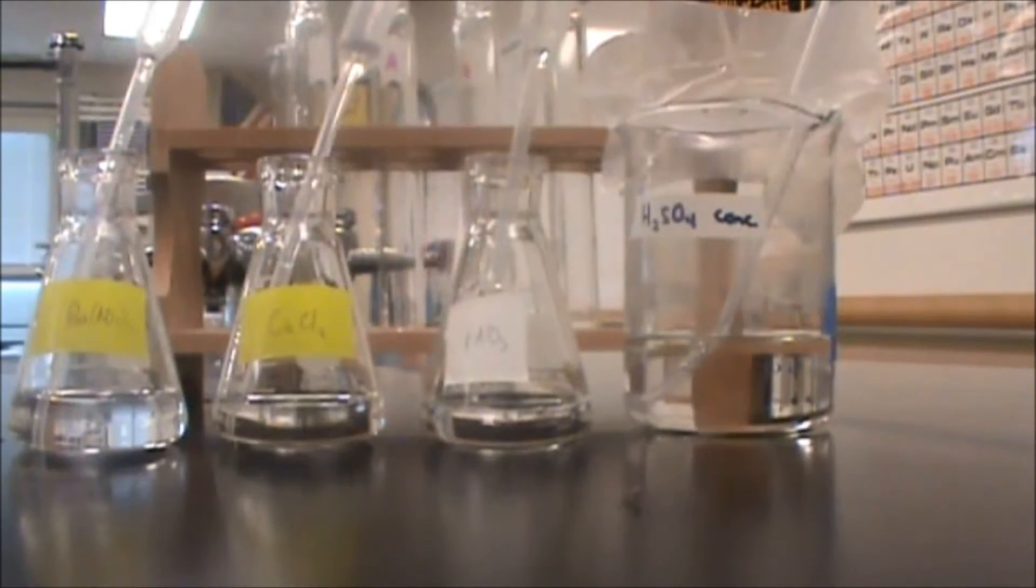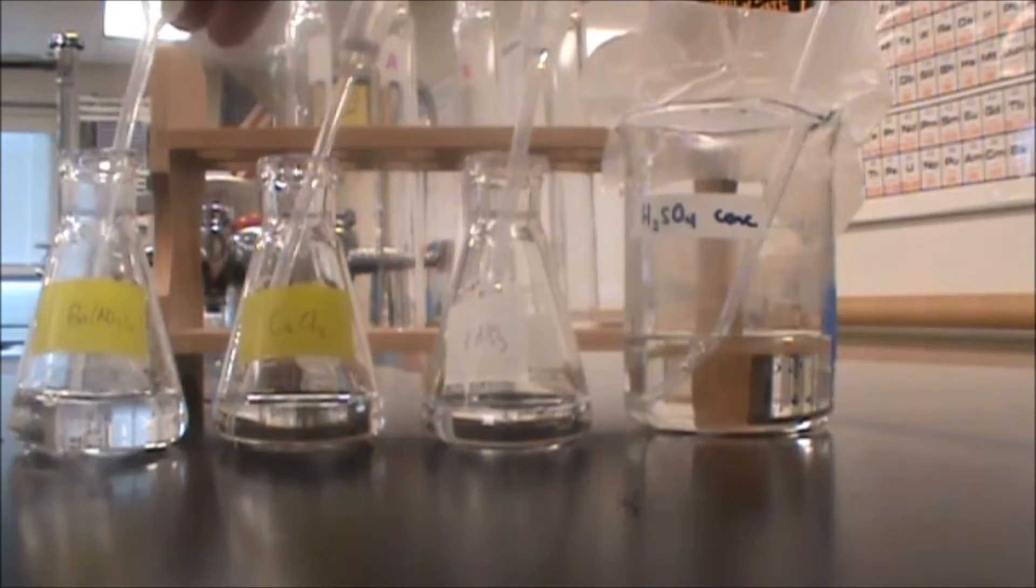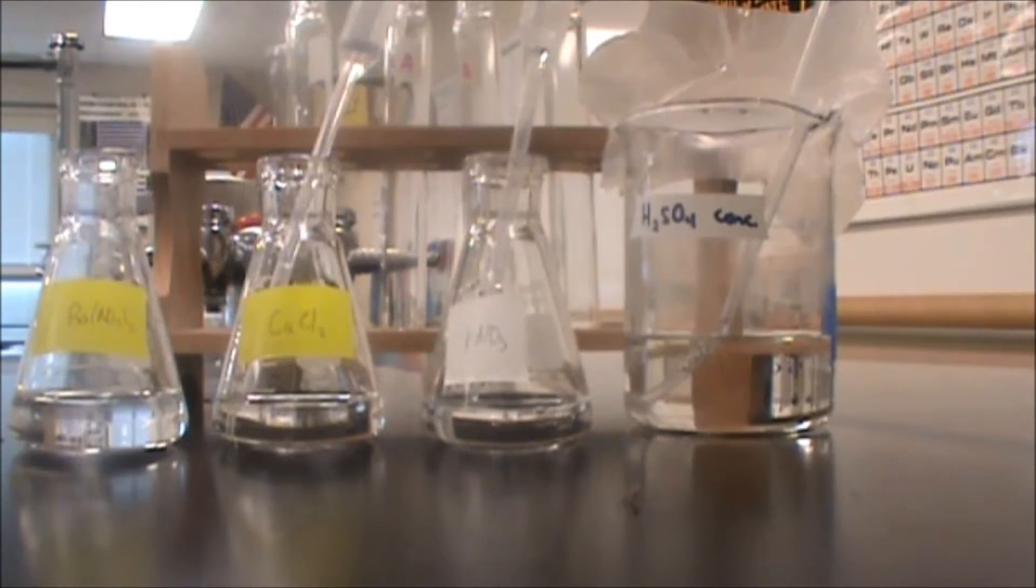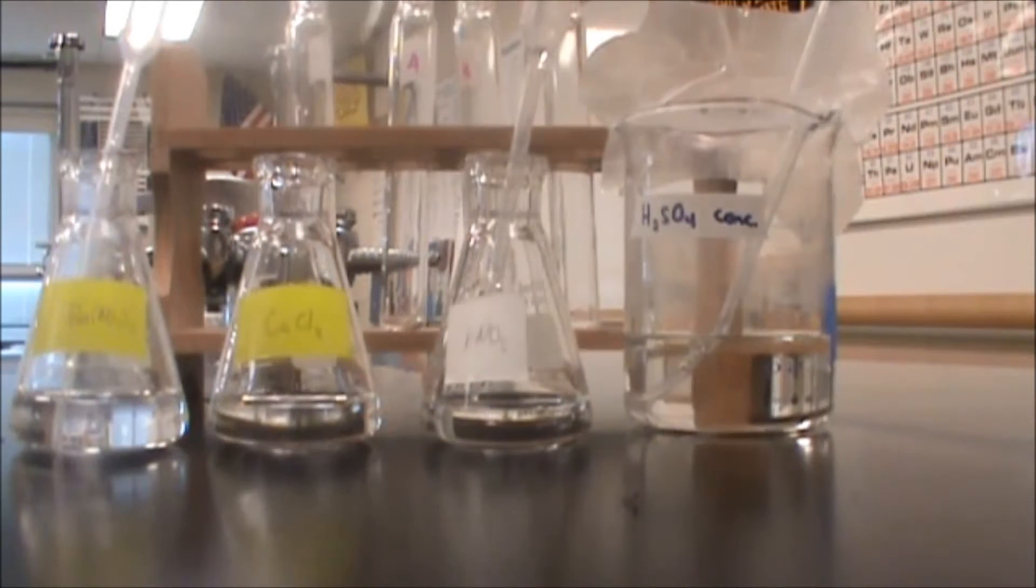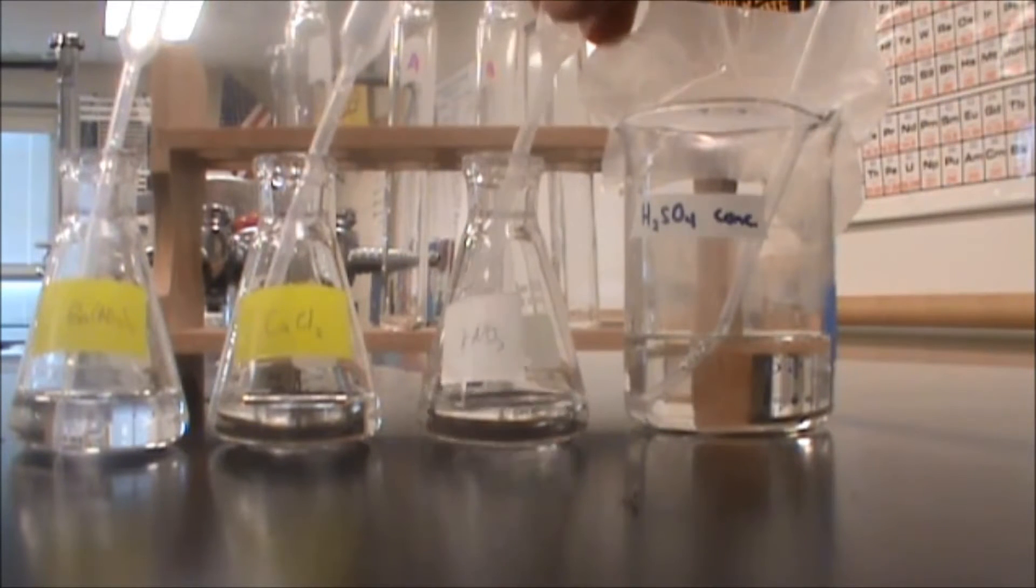Okay, so what we're going to do is we're going to take these three things and we're going to take a little bit of each. I'm going to put the barium nitrate into A, we're going to go alphabetically here, calcium chloride into B, and the potassium nitrate we're going to put into C.